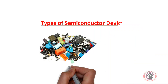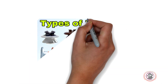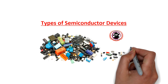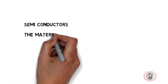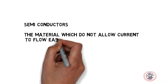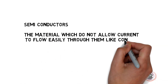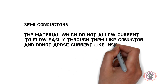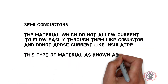This is the semiconductor — a material which does not allow current to flow as easily as a conductor, and does not oppose current like an insulator. This type of material is known as a semiconductor.